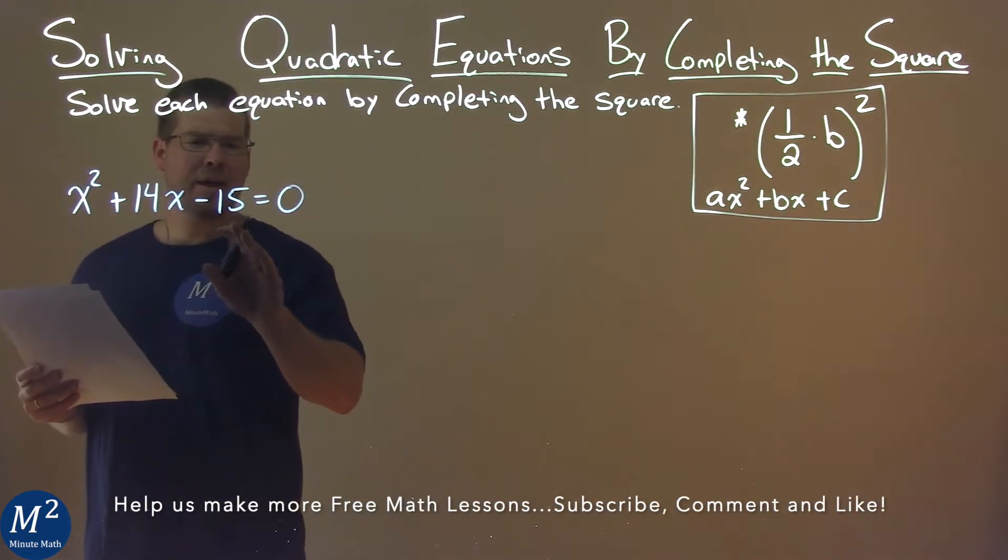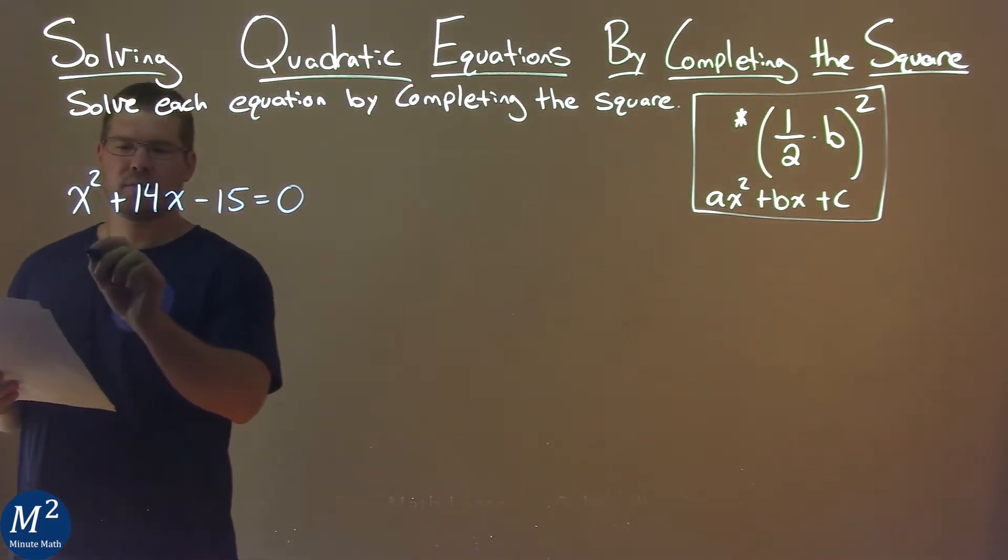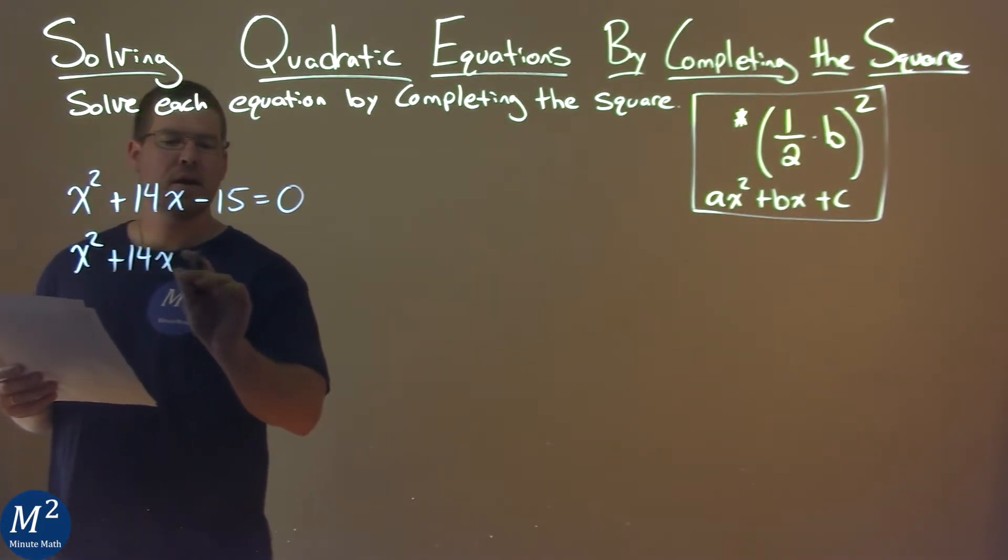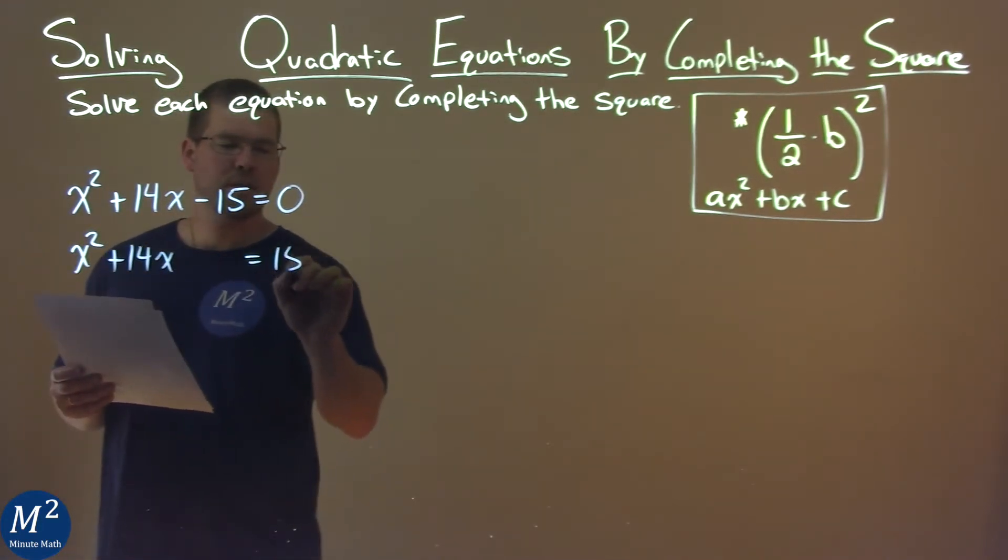Well, the first thing I want to do is I'm going to add a 15 to both sides. So we have x squared here plus 14x, I'm going to leave a space, equals a positive 15.